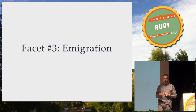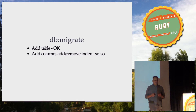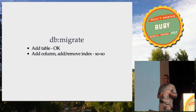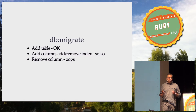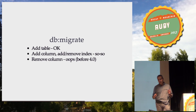Facet number three: database migrations. How do we do our database migrations while our service is running in production? We can easily add tables, add columns, or add indices — we may get some potentially big performance hits, but our application is still running fine. But if we try to remove columns from our tables, even if our application doesn't use any of these fields, we can have bad problems — at least before Rails 4, which fixed this.